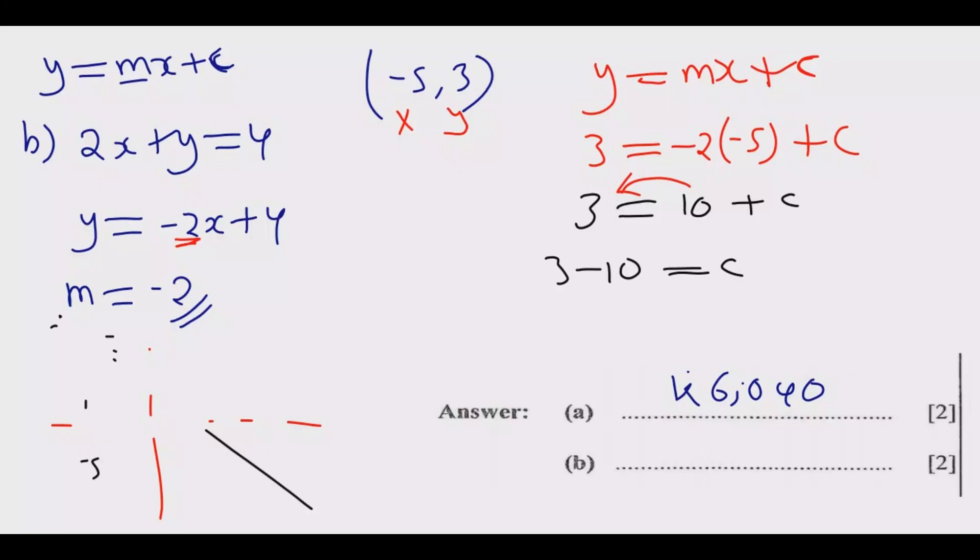So c equals 3 minus 10, which is -7. This crosses and becomes negative. Be careful - once we have -7 = c, we know what the value of c is. Now we can substitute in this equation.